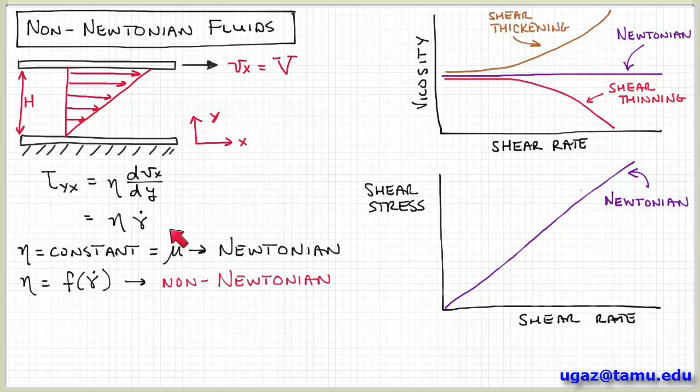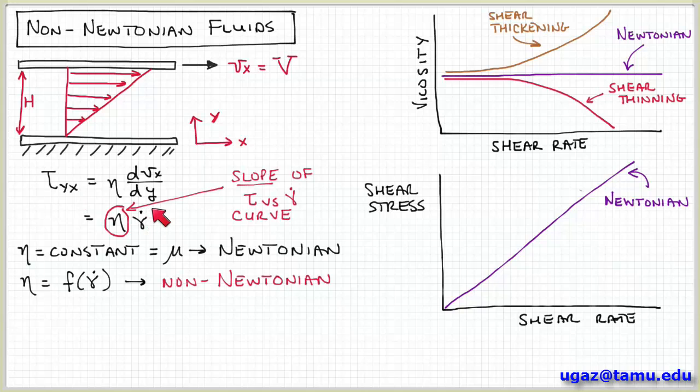So again, the viscosity coefficient we can see is basically the slope of the shear stress versus shear rate curve, or the tau versus gamma dot curve. So if this value is constant, then that corresponds to a linear relationship between shear stress and shear rate, which is what's shown here. So for a Newtonian fluid, the shear stress versus shear rate behavior is a straight line like shown here.